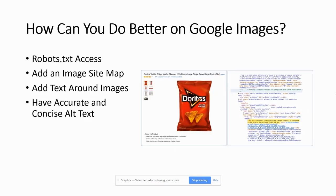Now, having accurate and concise alt text is important. This is a product — Doritos nacho cheese. The alt text isn't just 'bag of chips' or just 'Doritos', but it's specifically what it is. It's accurate and concise. It describes exactly what the picture is: Doritos tortilla chips, nacho cheese, 1.5 ounce, large single serve bag, pack of 64. So it's telling you exactly what this image is. This is the way we should be writing alt text, to make sure that images are better understood by the Google bots and help you earn those coveted positions in image search.